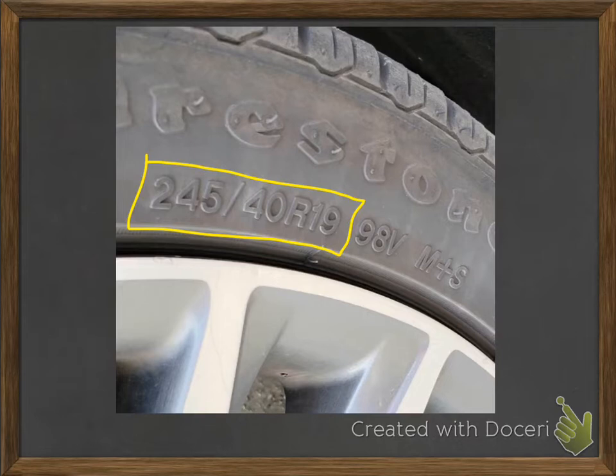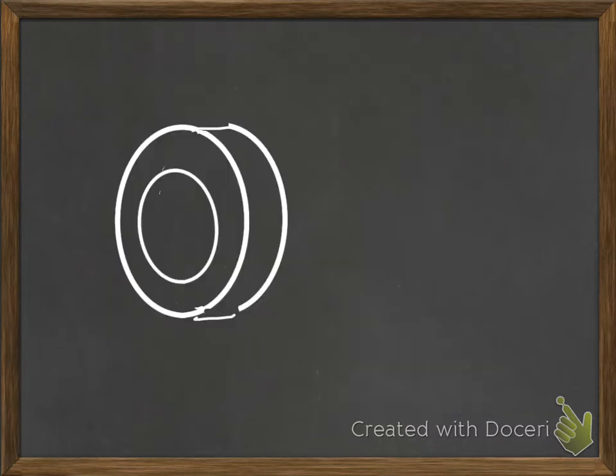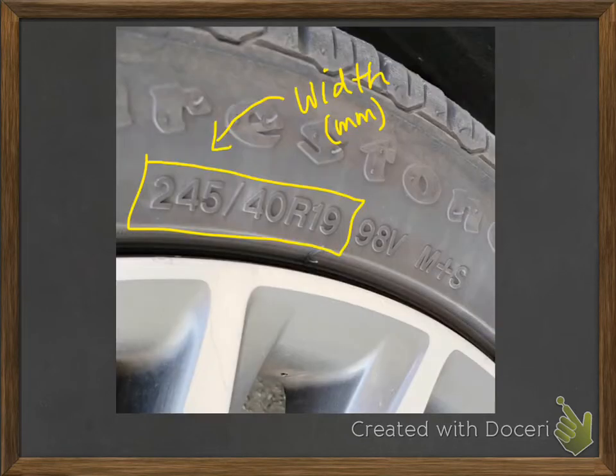This right here is actually the width of the tire, but it's the width in millimeters. So here's my lovely design of a tire. The width is actually this part here, like how wide this rubber strip is. That's our width.